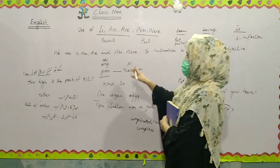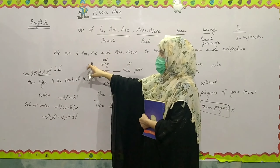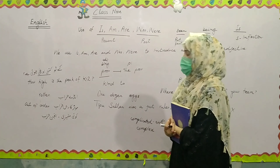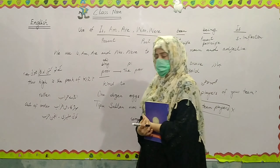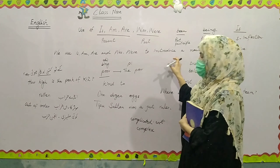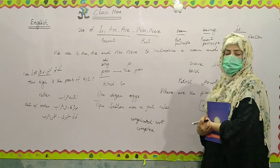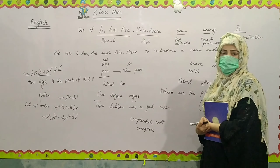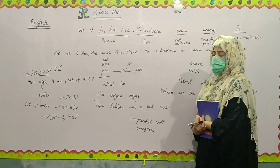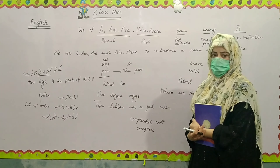They are also used in a simple way — when we use is, am, are and most words, we introduce an adjective and any noun. So we can say they also make the tense present indefinite and past indefinite, and they are also used to introduce a noun and an adjective.